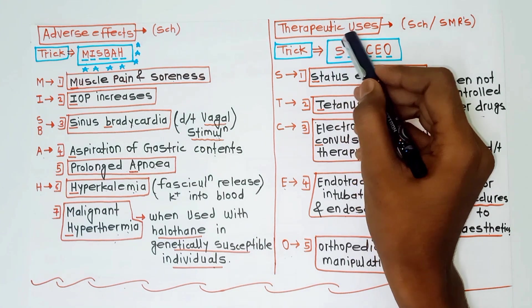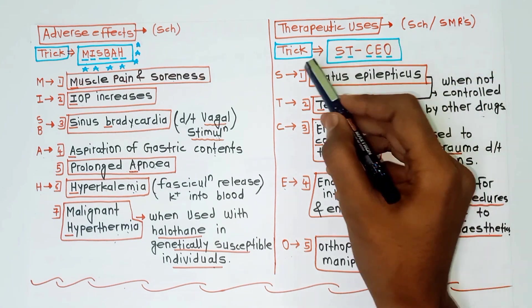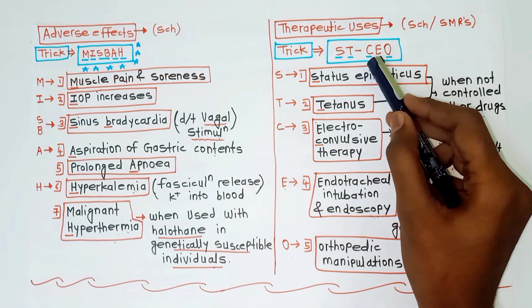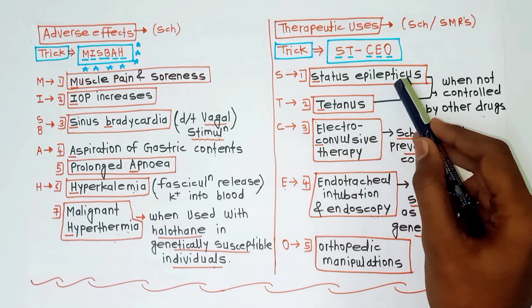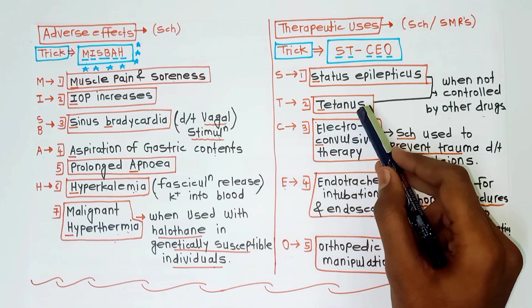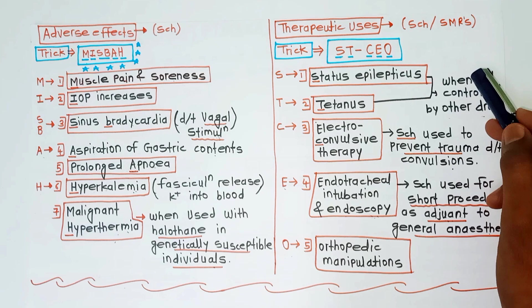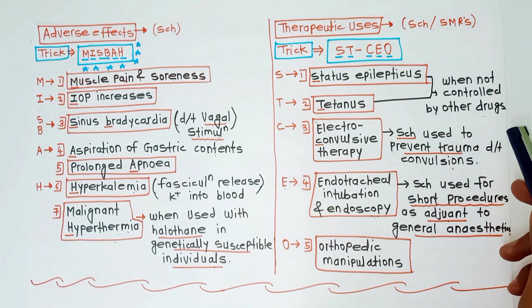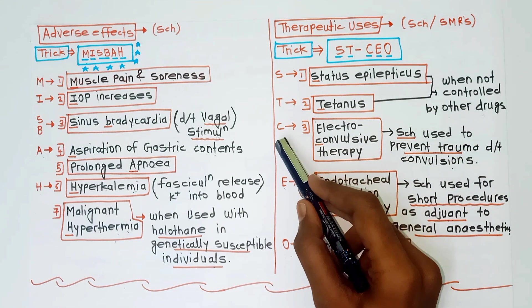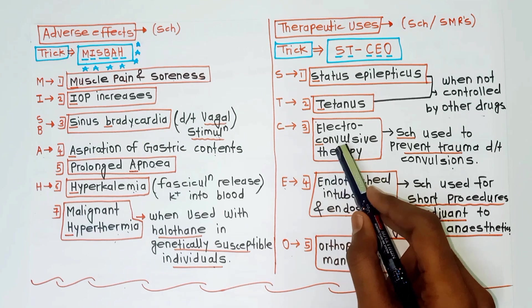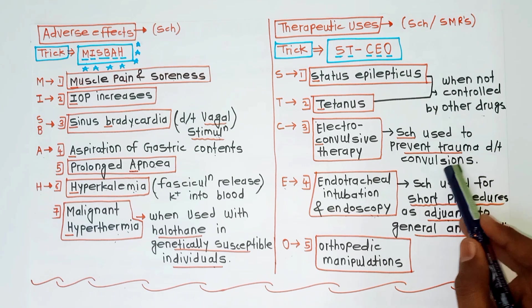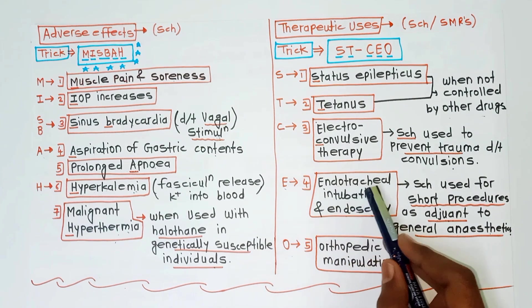For therapeutic uses, the trick is ST CEO — because my favorite job is CEO (Chief Executive Officer). S for status epilepticus, T for tetanus — succinylcholine is used when these are not controlled by other drugs. C for electroconvulsive therapy — succinylcholine is used here to prevent trauma due to convulsions.